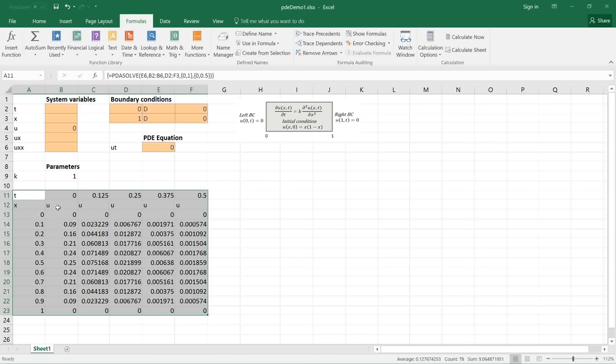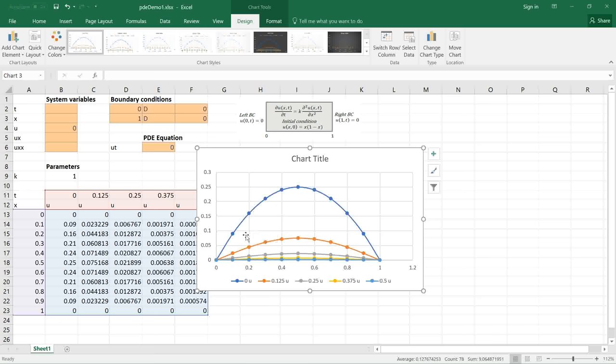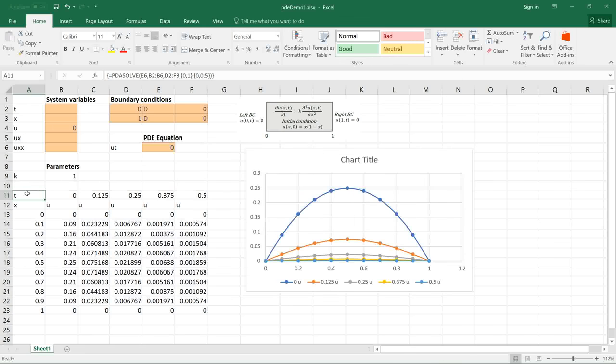I can highlight the array and insert a scatter plot. Here we are looking at the spatial distribution of U at various time points.